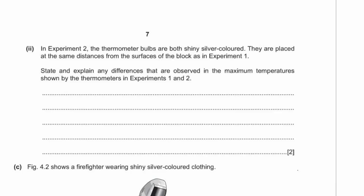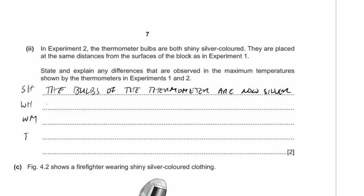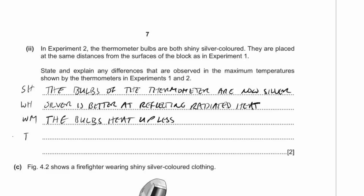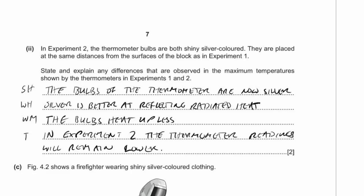In experiment two, both thermometer bulbs are shiny silver-coloured, placed the same distance from the surfaces as in experiment one. Silver is better at reflecting radiated heat, which means the bulbs heat up less. Therefore, the thermometer readings in experiment two will remain lower than those in experiment one.